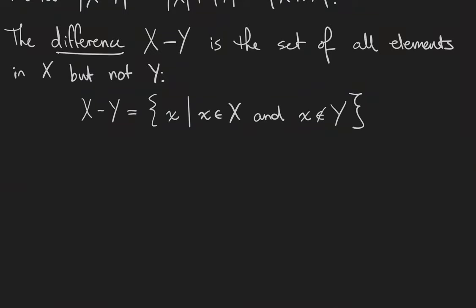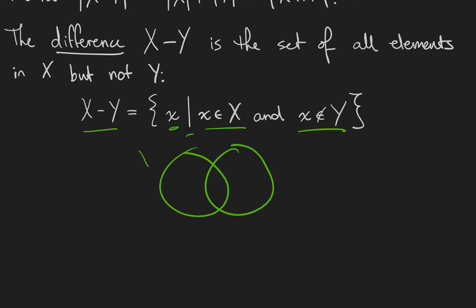The difference between two sets is the set of all elements that are in the first set but not in the second. So x minus y is the set of all x such that x is a member of x but x is not a member of y. In the Venn diagram, x minus y is just the region of x that does not overlap with y. Notice that order matters here — y minus x is going to be a different set than x minus y.